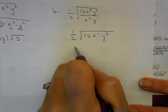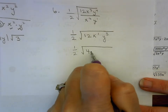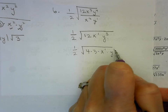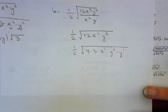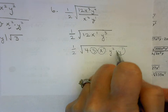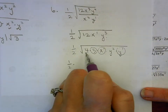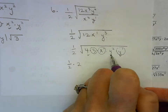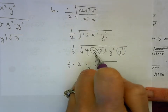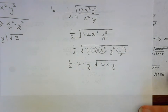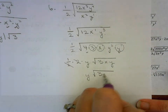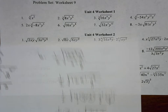Now I'm going to break up my 12: 12 is 4 times 3. I have x to the first, and y cubed — I want to split one y off so I have an even power. After the rewrite, I take square roots of what I can. I don't know the square root of 3, x, or y. So I have one half times the square root of 4, which is 2, times the square root of y squared, which is y — not absolute value because it wasn't originally y squared. Then one half times 2 is 1, so the final answer is y times the square root of 3x times y. And that's it for Objective 2.